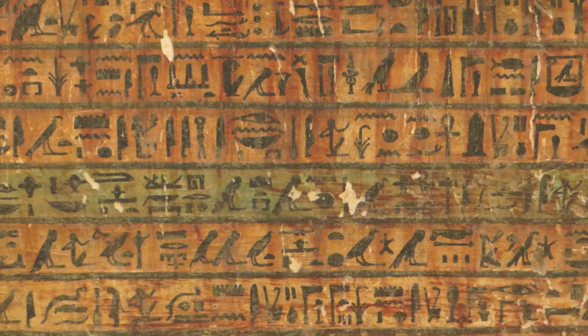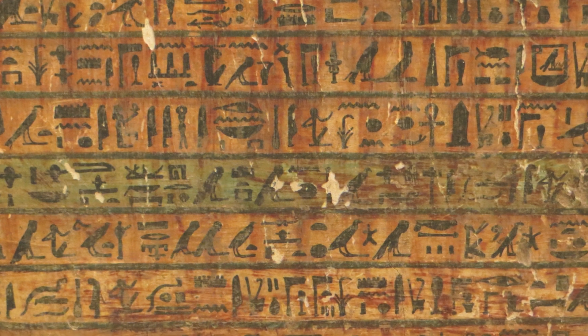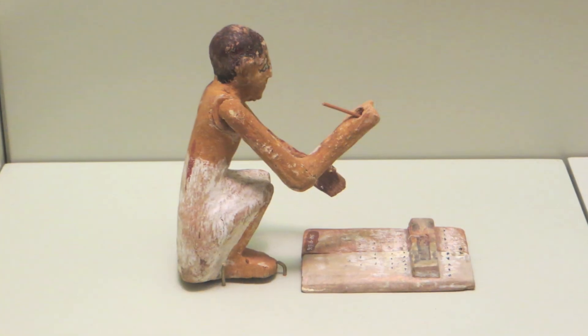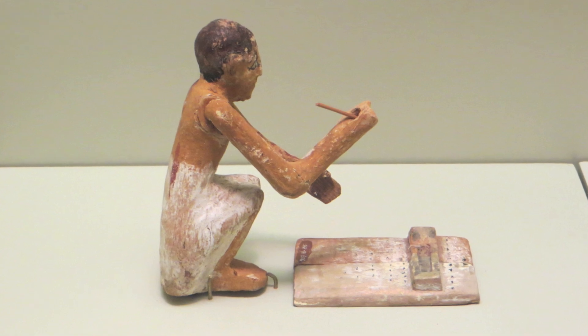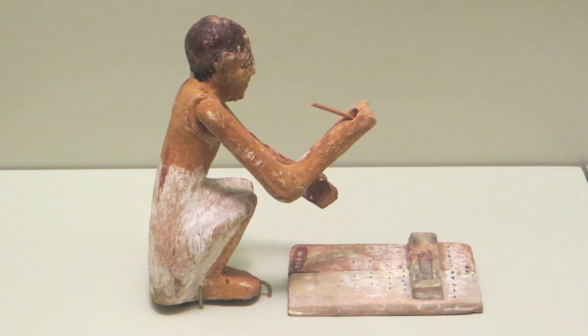For over 3,500 years, people in Egypt used hieroglyphs to write their language. For most of that time, a scribe would have to learn about 800 signs in order to be able to read and write well.